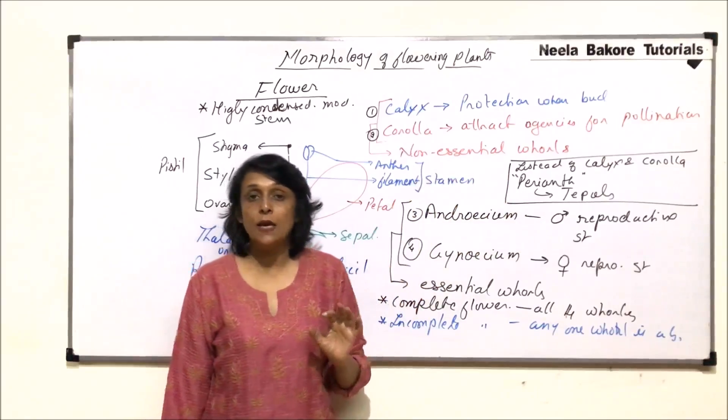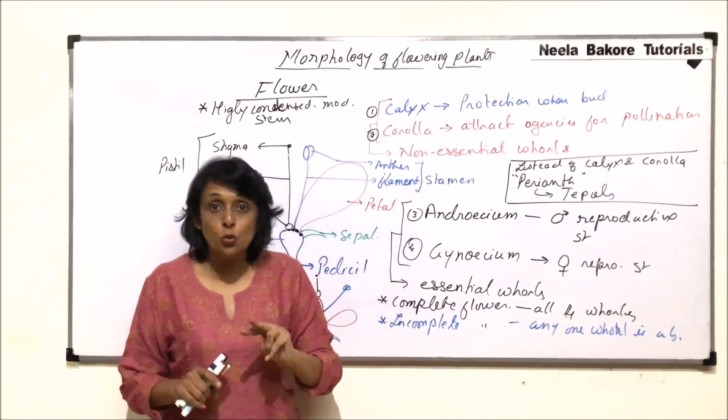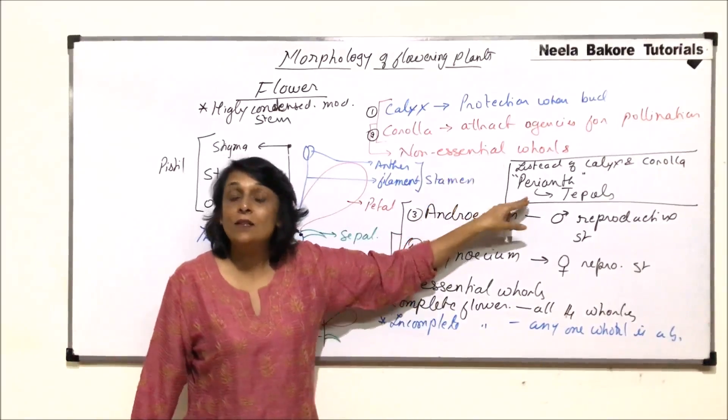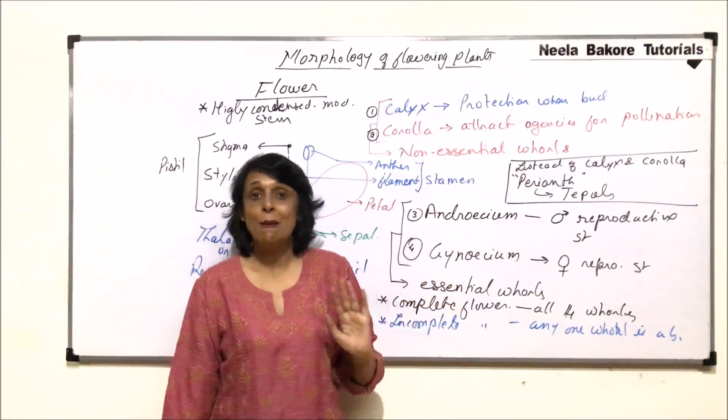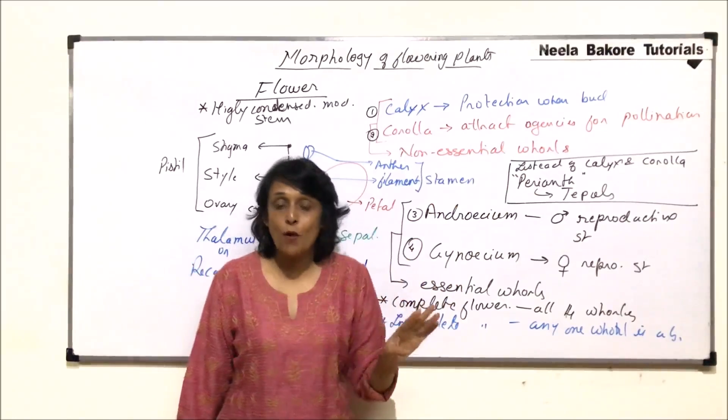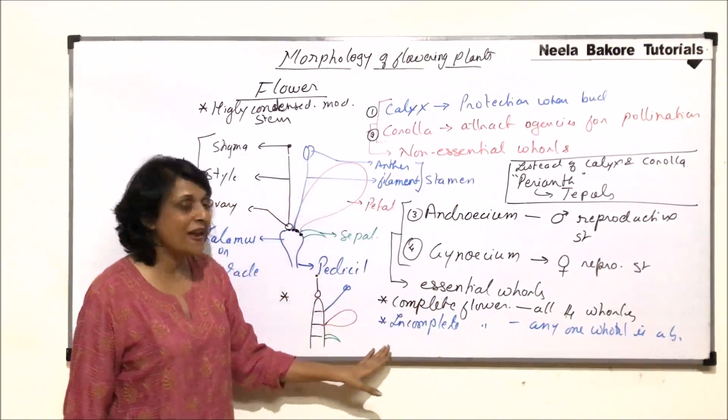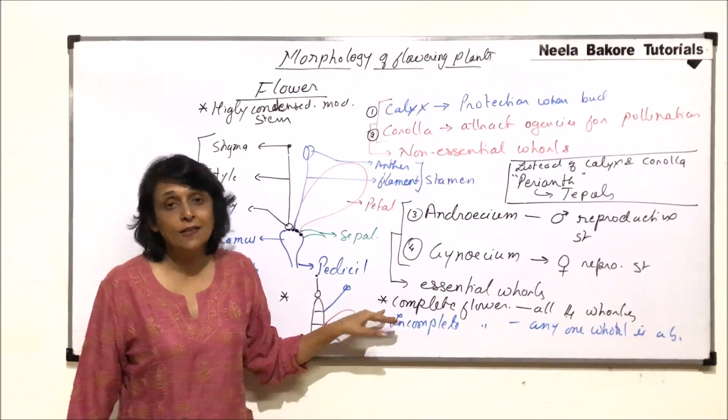Whereas, the situation is there is no calyx, no corolla. Instead of these two, there is this third whorl. This is another whorl which is called perianth. It is instead of these two. It is not formed by the fusion of calyx and corolla. This is the basic structure of the flower.